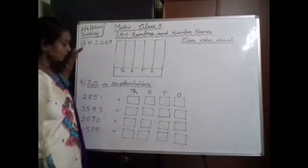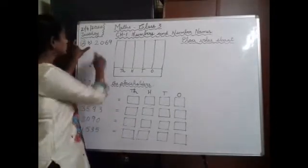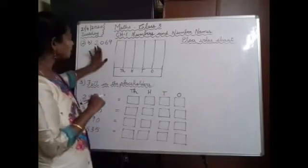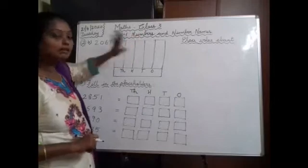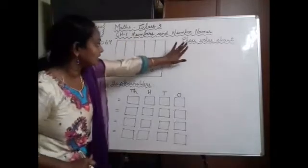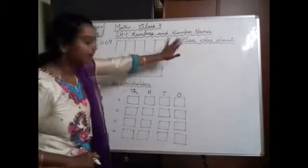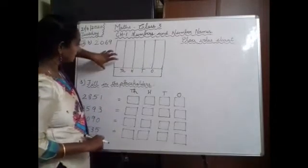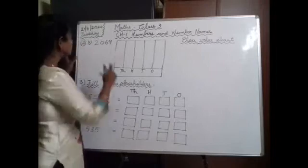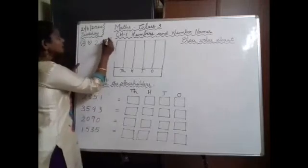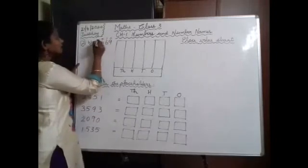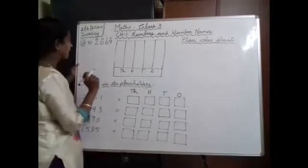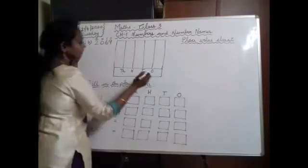Question 2, part B: 2,069. You have to represent this in the Abacus and write the place value chart also. Before placing it in the Abacus, write 1s, 10s, 100s, 1000s about the number.